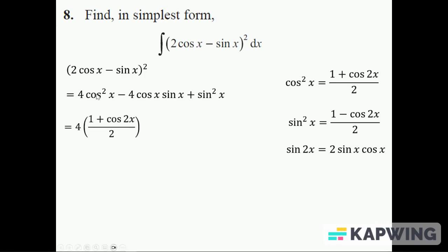So replacing the cos squared with (1 + cos 2x)/2 over here, the 4cos x sin x with 2sin 2x, so I've got 4((1 + cos 2x)/2) - 2sin 2x, and this sin squared I replace with (1 - cos 2x)/2.